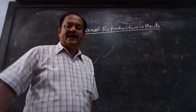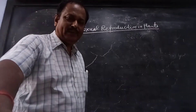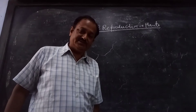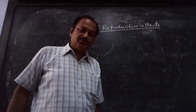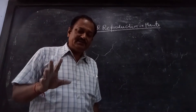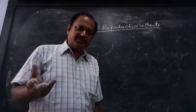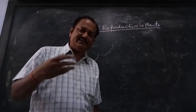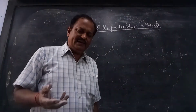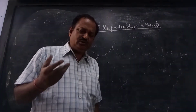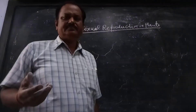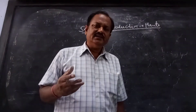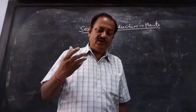In this video I am going to explain about the sexual reproduction in plants. Plants also undergo sexual reproduction like developed animals, and this sexual reproduction basically takes place in the following manner.